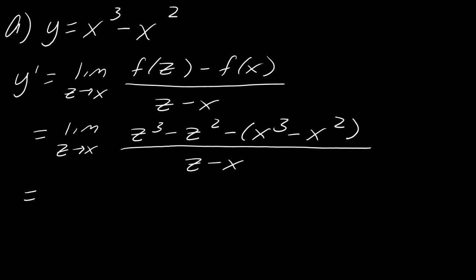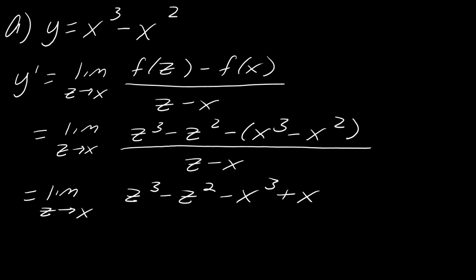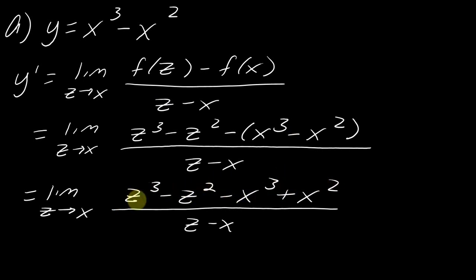The hint I want to give you is: you might be thinking you'll just factor this and cancel, but if you try to factor as-is, you're actually not going to be able to do much — you won't be able to cancel anything out. If you look at the denominator, z minus x, you'd like to cancel it. But the numerator has z's and x's separately. So you actually need to co-mingle your z's and x's together when factoring.